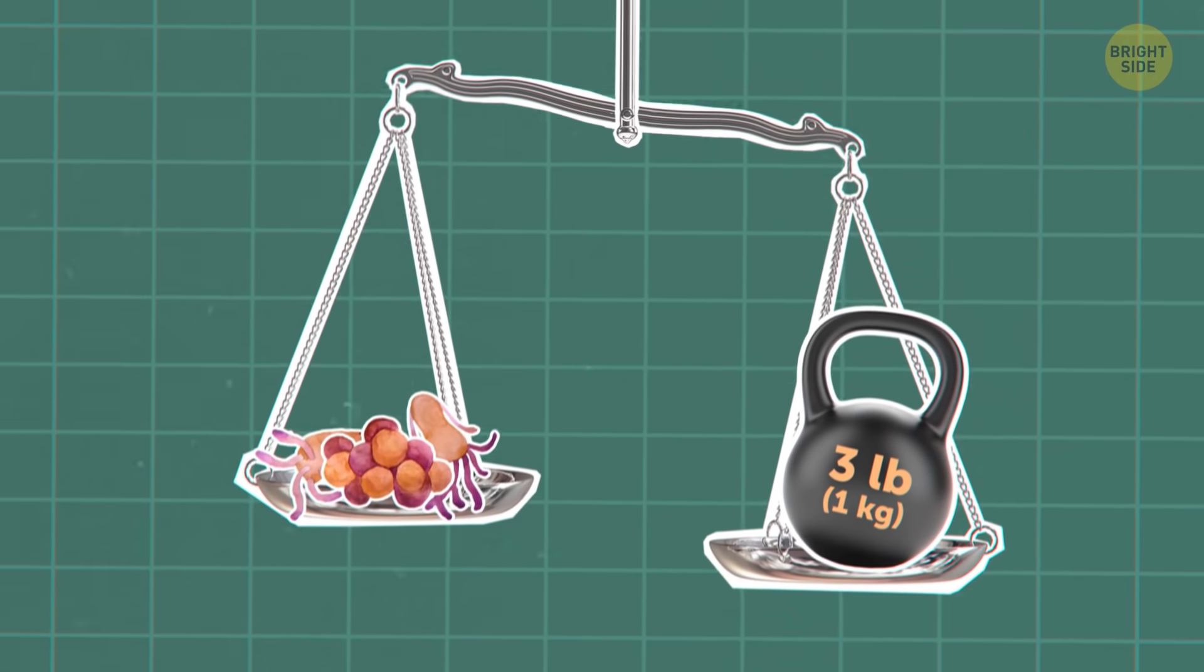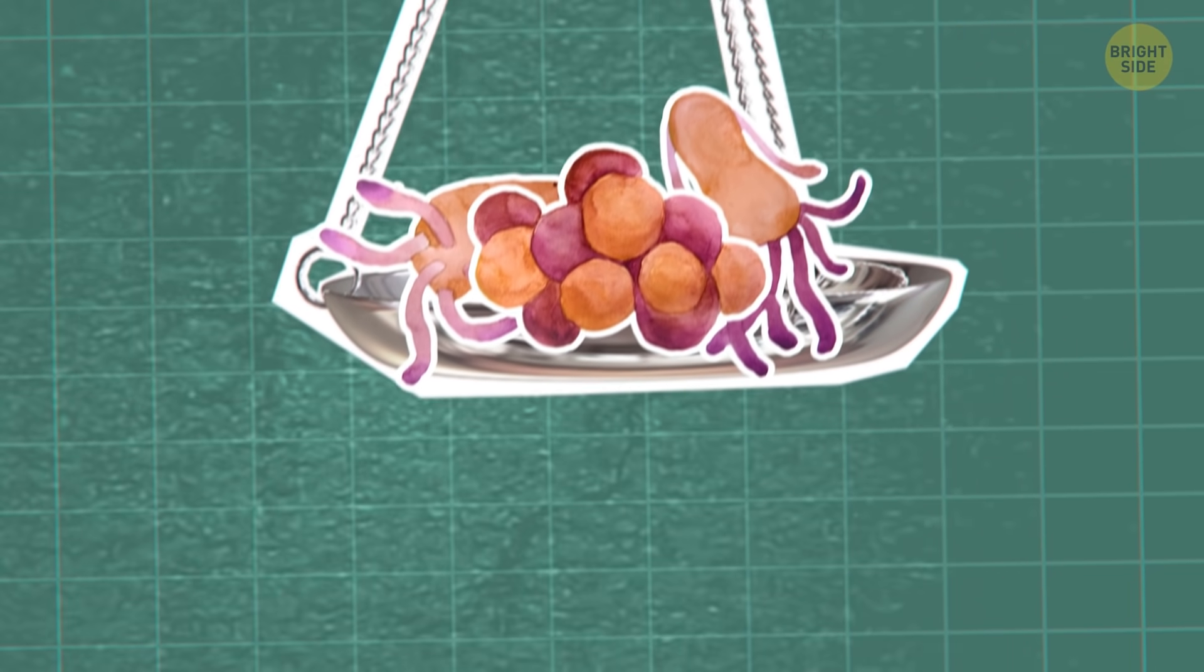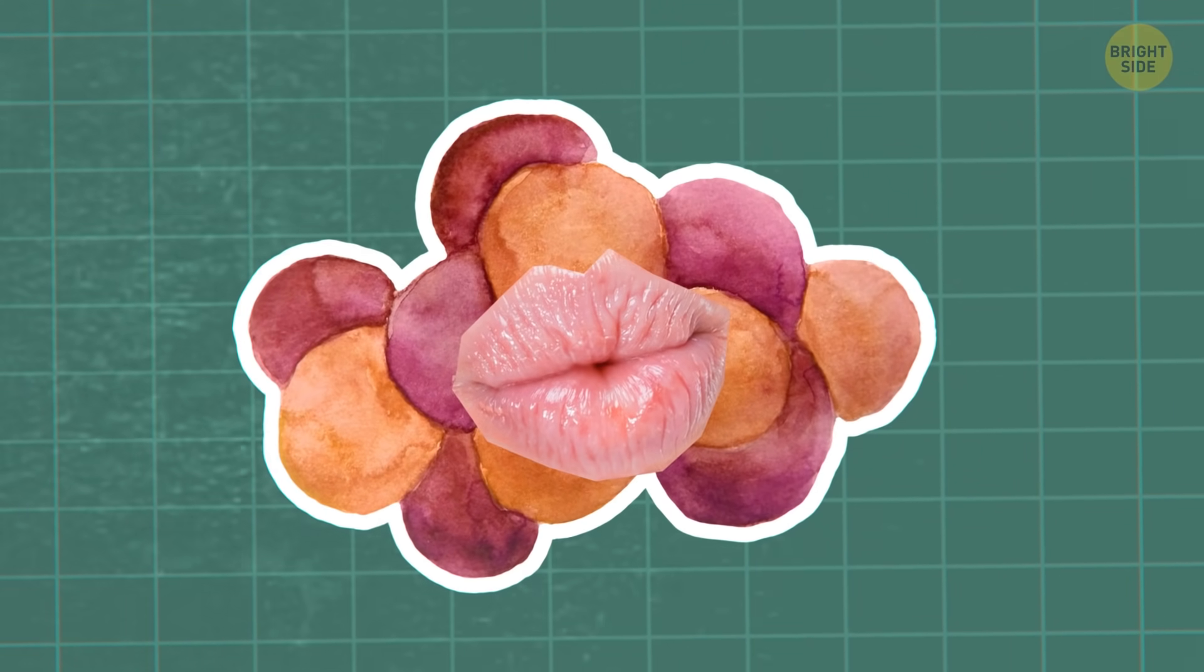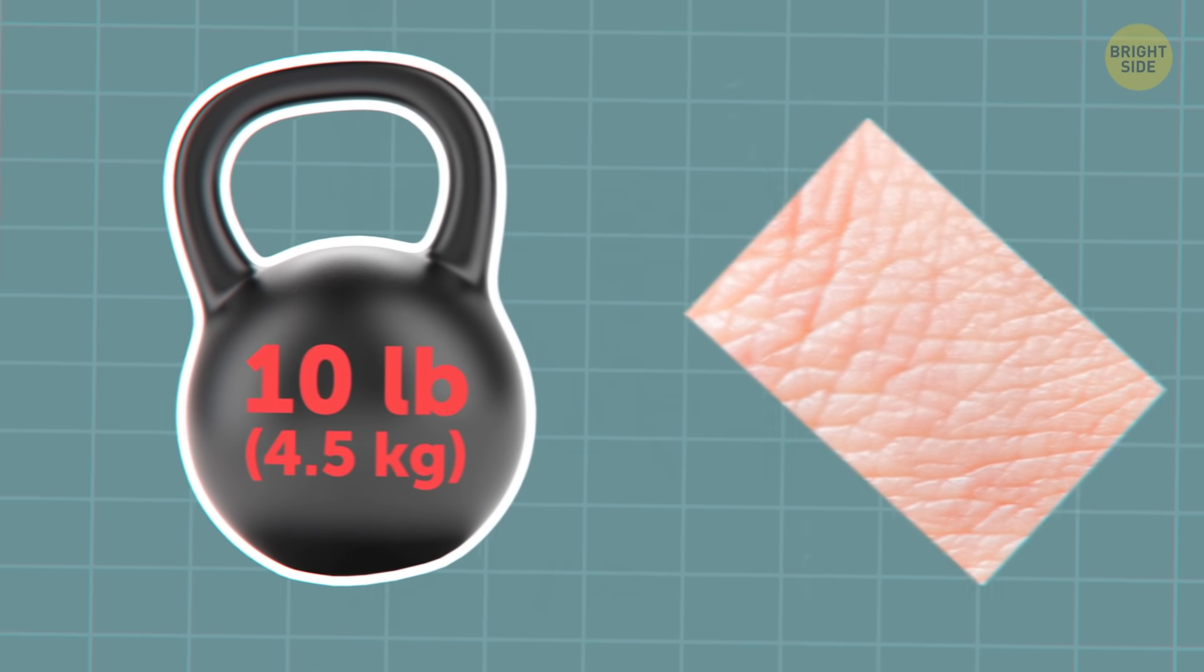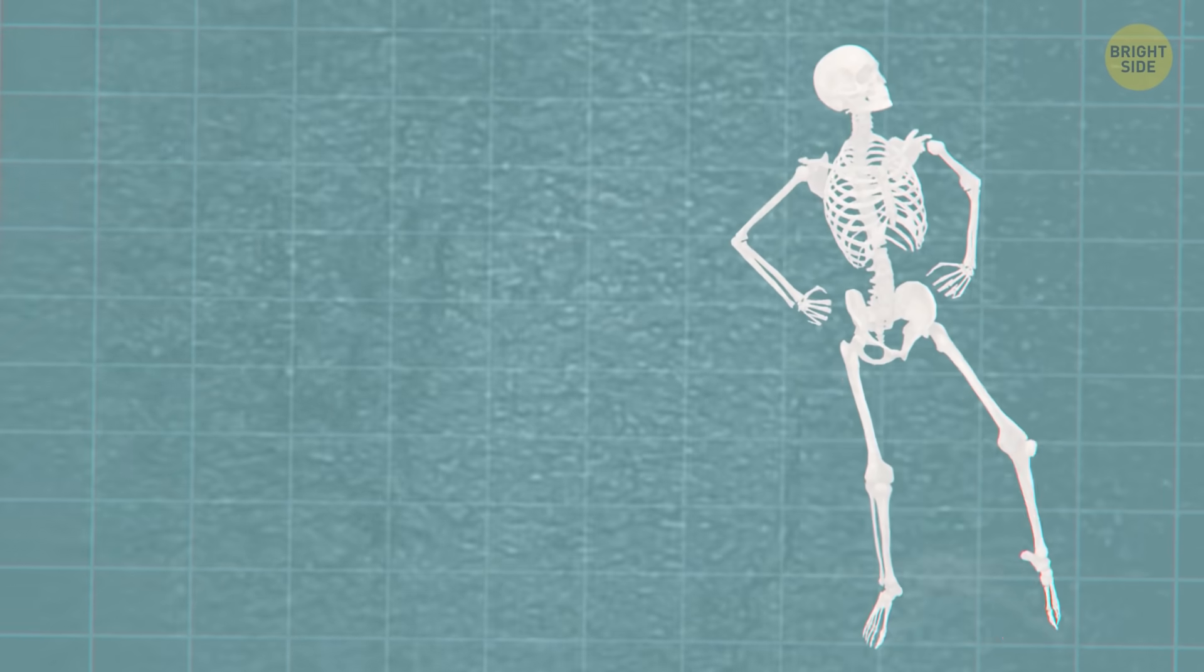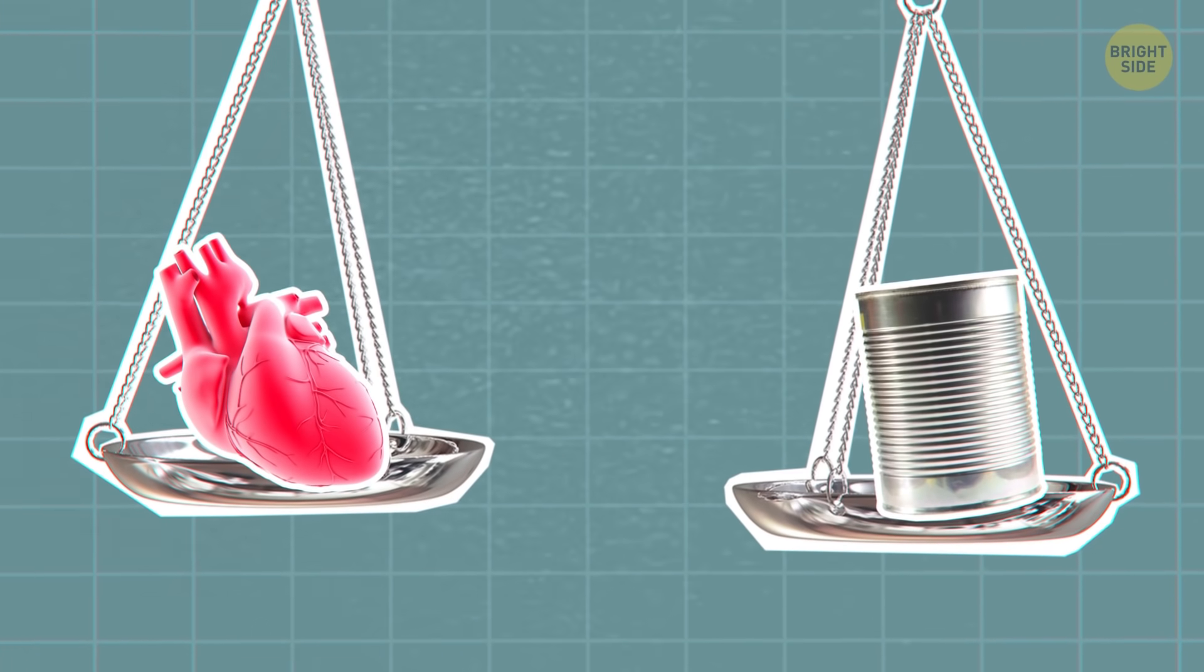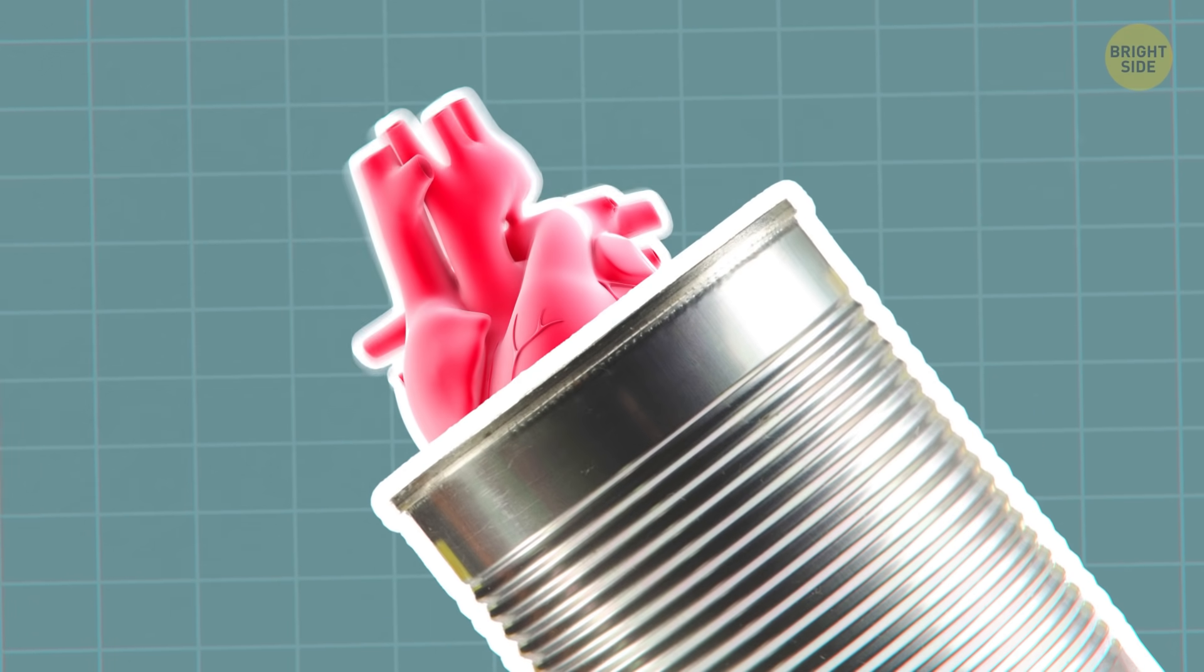About 3 pounds of your body are bacteria, fungi, and other microscopic organisms that are a part of you. Don't worry, they're there to keep you healthy. 10 pounds of you is just your skin. Double that for your bones. And just for good measure, your heart weighs the same as a can of soup. Which explains hearty soup, I guess. Maybe not.